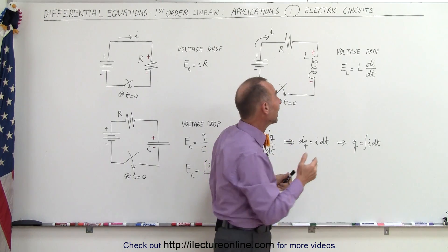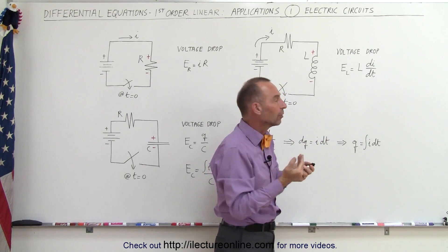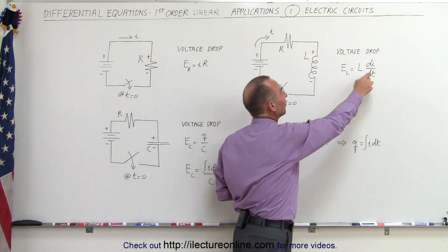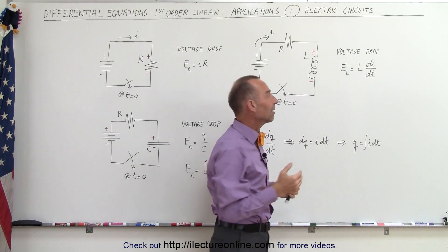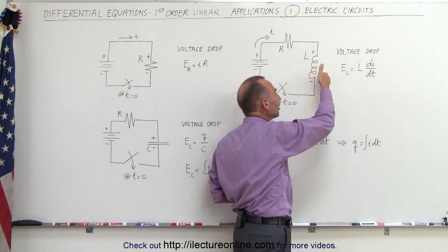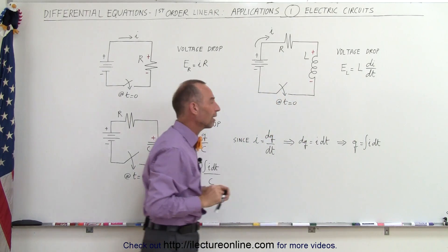Now, if the current is actually decreasing for whatever reason, then if this is a negative quantity, we'll actually have a voltage rise across the inductor. So we have a voltage drop if the current is increasing, and we have a voltage rise when the current is decreasing across an inductor. That's good to know.